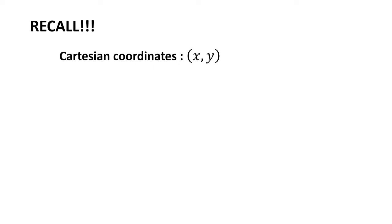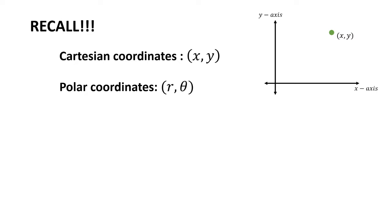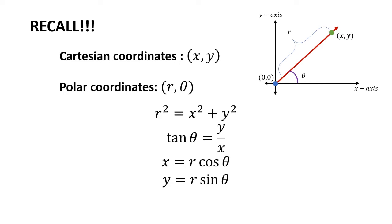Let's recall the conversion from Cartesian coordinates to polar coordinates and vice versa. A point in Cartesian coordinates is given by the ordered pair (x, y), while a point in polar coordinates is given by the ordered pair (r, θ), where r is the distance between the origin and the point (x, y), and θ is the angle between the ray formed by the origin and (x, y) and the positive x-axis. The following conversions can be used to convert equations in Cartesian to polar coordinates.